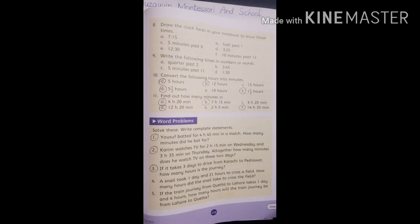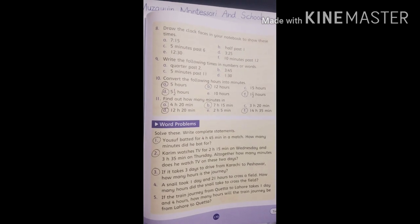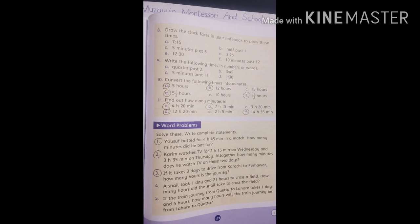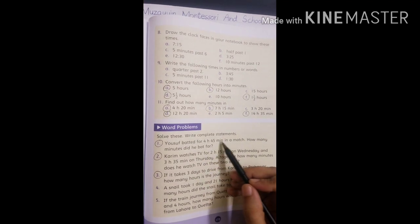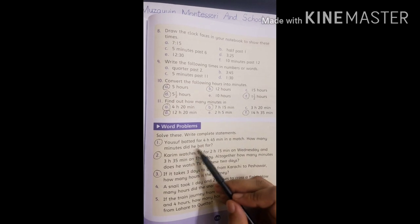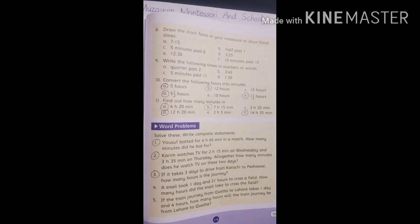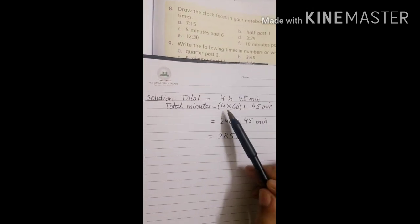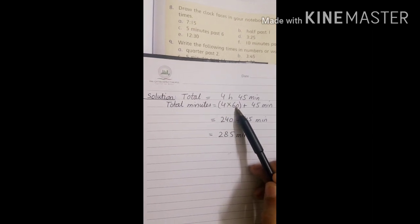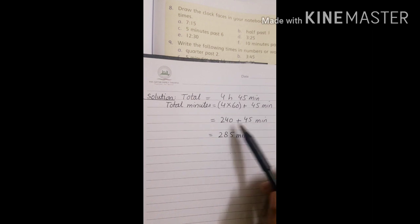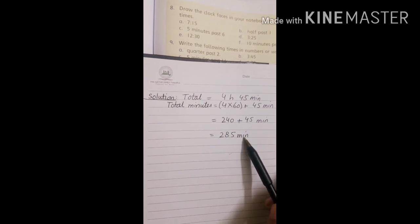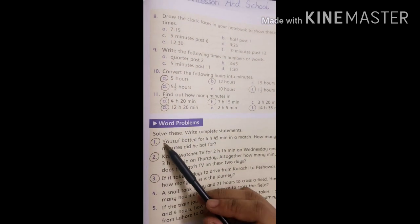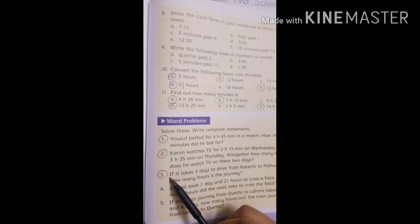First question: Yusuf batted for 4 hours 45 minutes in a match. How many minutes did he bat for? Total is 4 hours 45 minutes. Convert: 4 times 60 is 240, plus 45 equals 285 minutes. Do question number 1, 2, and 3 on your notebook. Allah Hafiz.